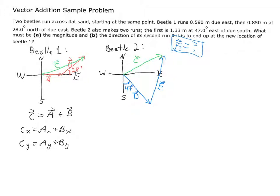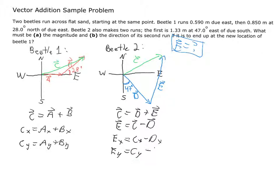By our vector addition tools, vector c = vector d + vector e. Rearranging, e = c − d. In terms of components: ex = cx − dx, and ey = cy − dy. Just by setting this up — without doing any math yet — I can see I'll need to break vectors a and b into their x and y components to find cx and cy, then break vector d into its components to finally solve for vector e.